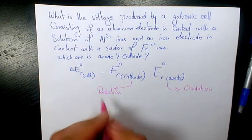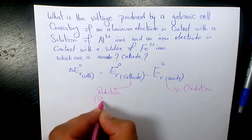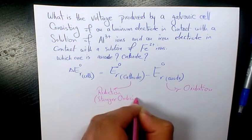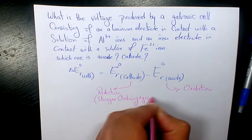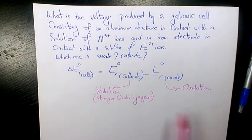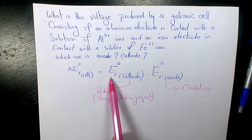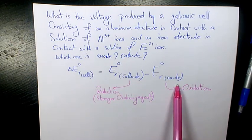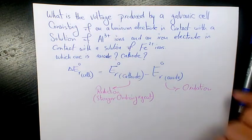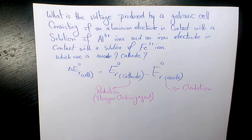The one that has reduction is the one that is the stronger oxidizing agent. And when you see the table for standard reduction potential, this one has to be above the other element. So let's find out the standard reduction potential for aluminum and for iron.